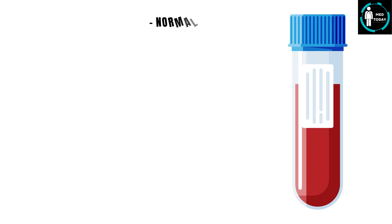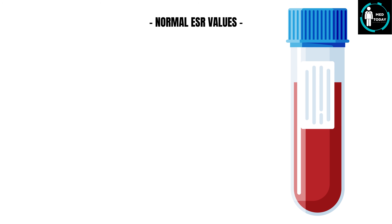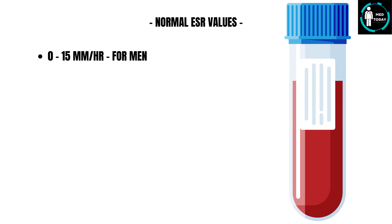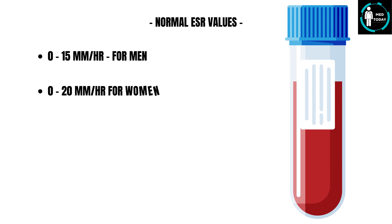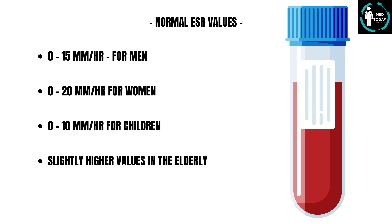Normal ESR values are as follows: 0 to 15 mm per hour in men, 0 to 20 mm per hour in women, and 0 to 10 mm per hour in children. In elderly people, slightly higher values are considered normal.